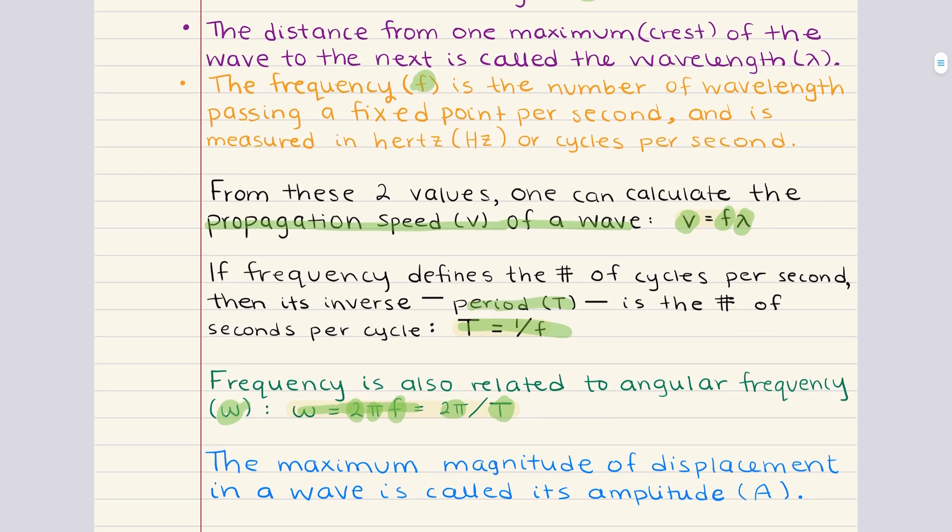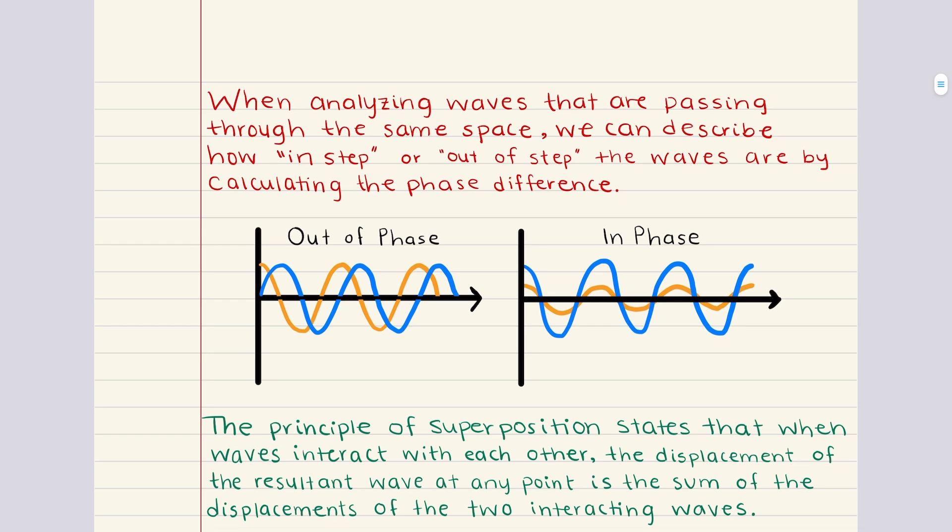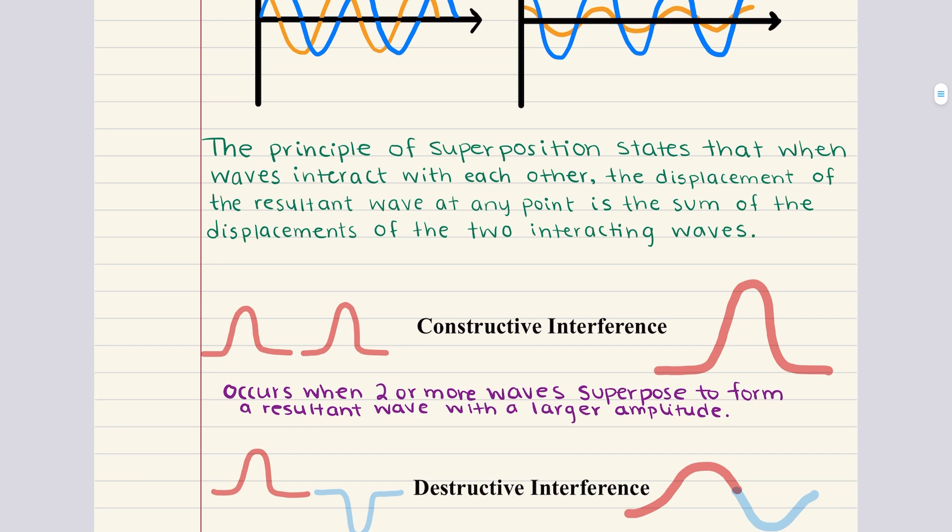Now, when we're analyzing waves that pass through the same space, it becomes important to describe how the waves align with one another. This alignment, or lack thereof, is expressed through the concept of phase difference. Phase tells us whether two waves are in step or out of step as they propagate. When two waves are perfectly aligned, meaning their peaks and troughs occur at the same points, they're said to be in phase. On the other hand, when the peaks of one wave align with the troughs of another, the waves are considered out of phase. Understanding phase difference allows us to predict how these waves will interact with each other. And this interaction between waves leads us to the principle of superposition, which explains how waves combine.